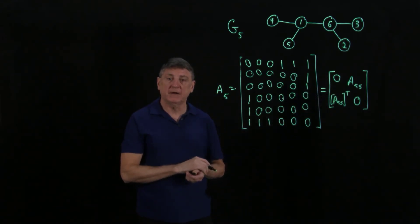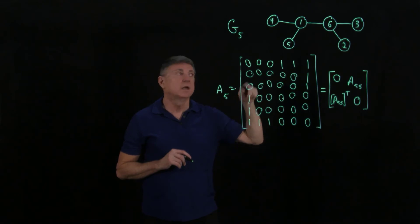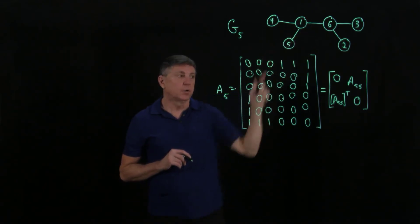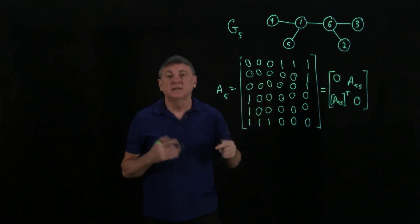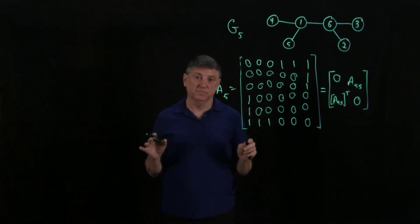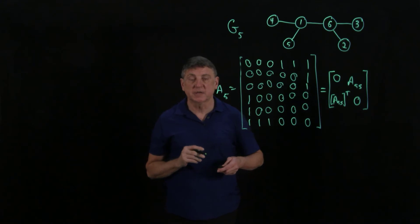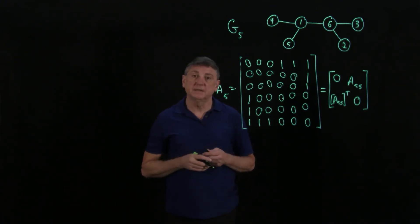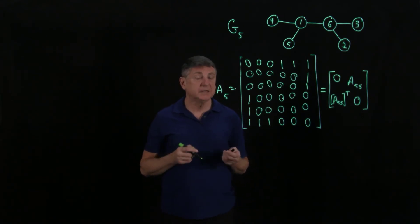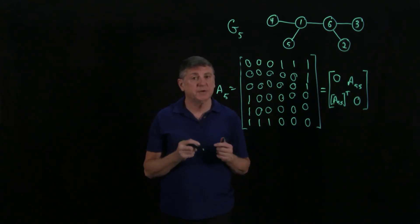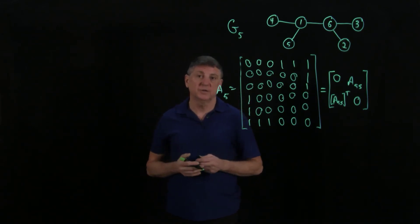For any bipartite graph, the vertices can always be renumbered so that this block structure appears in the adjacency matrix. Renumbering the vertices corresponds to permuting the rows and columns of the adjacency matrix. The problem of determining whether two graphs are isomorphic — equivalently, whether one adjacency matrix is similar to another — is a problem whose complexity is currently not known. We don't know if it is NP-complete, and testing all possible renumberings is exponential.